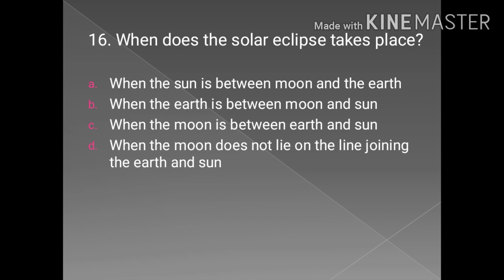When does the solar eclipse take place? The right answer is when the moon is between Earth and Sun. Solar eclipse occurs when the moon gets between Earth and Sun. The moon casts the shadow over the Earth.